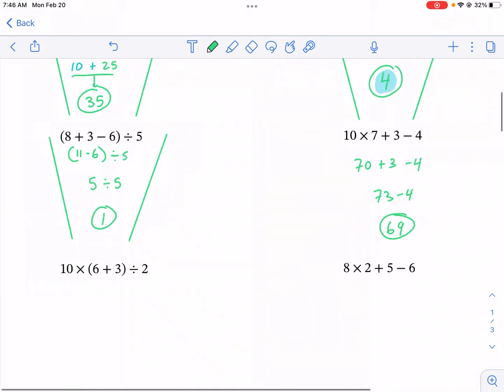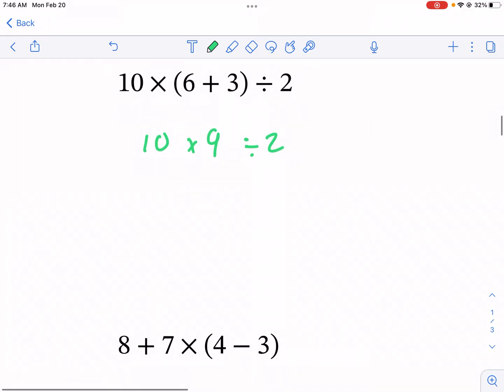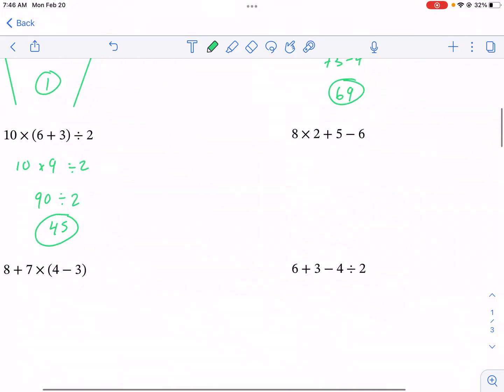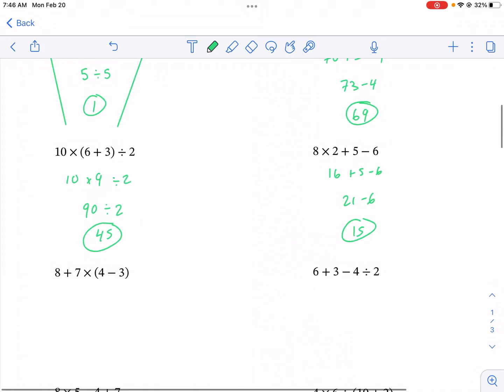All right, here we have parentheses—we have 9 times 10 divided by 2. What do I do first, division or multiplication? I'm just gonna go left to right. In this case it's multiplication first—9 times 10 is 90, divided by 2, that gives me final answer 45. You can kind of see the natural funnel effect as you do this—goes from complex to less complex. 16 plus 5 minus 6, that gives me 21 minus 6, and that gives me 15 as my final answer.